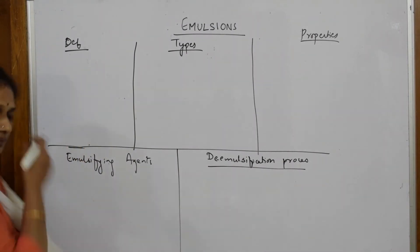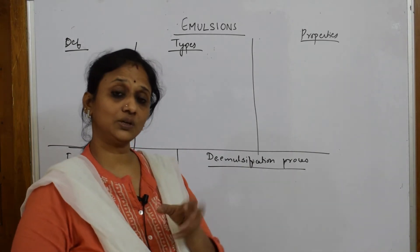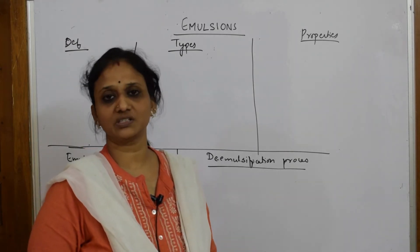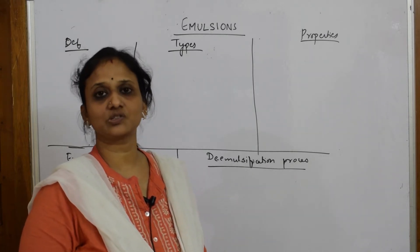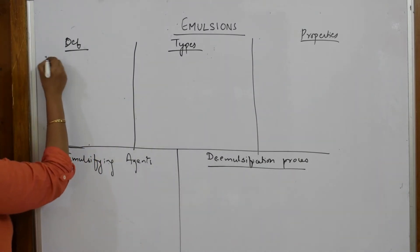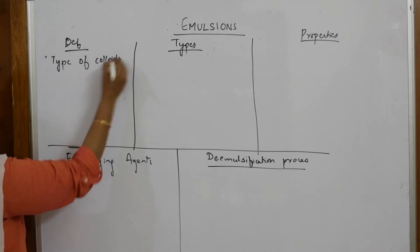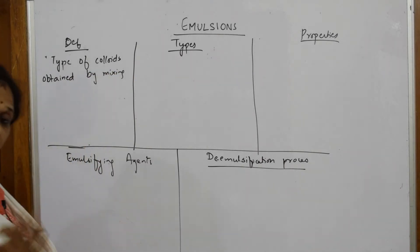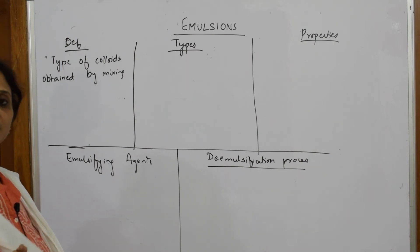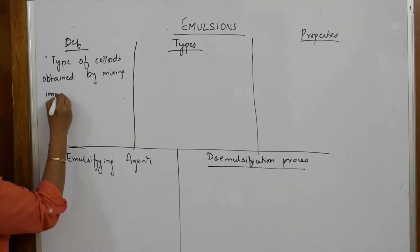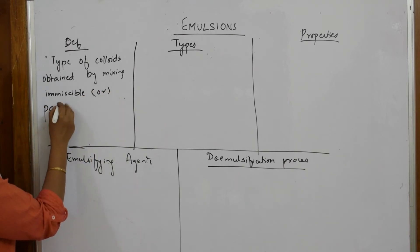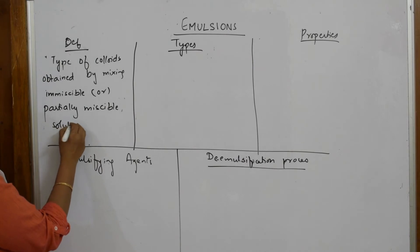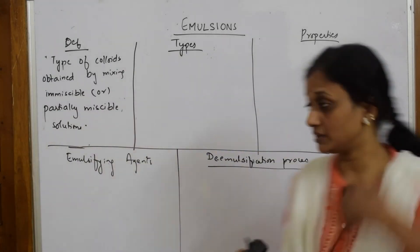For the definition of emulsions: emulsions are a type of colloid. The key difference is that you are mixing either partially miscible or completely immiscible liquids. Miscible means soluble; immiscible means not at all soluble. So emulsions are a type of colloid obtained by mixing immiscible or partially miscible liquid solutions.